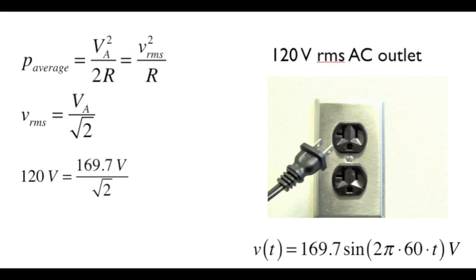Going back to the picture of the outlet from the beginning of this lesson, that 120 volt outlet, the 120 volts refers to the rms value. So the corresponding peak amplitude of the sine wave is the square root of 2 times 120, or 169.7 volts. And that's where the 169.7 volts comes from.